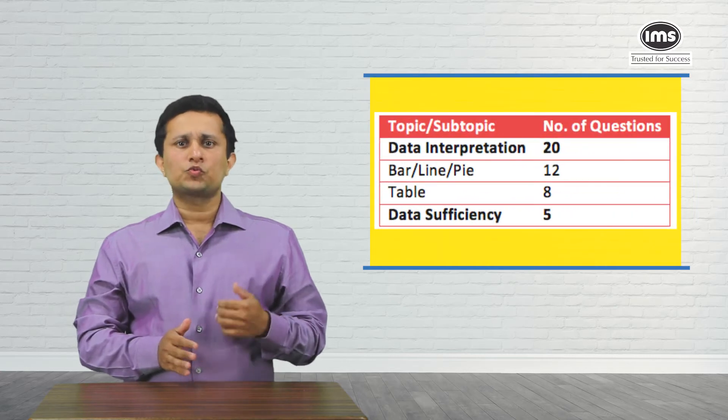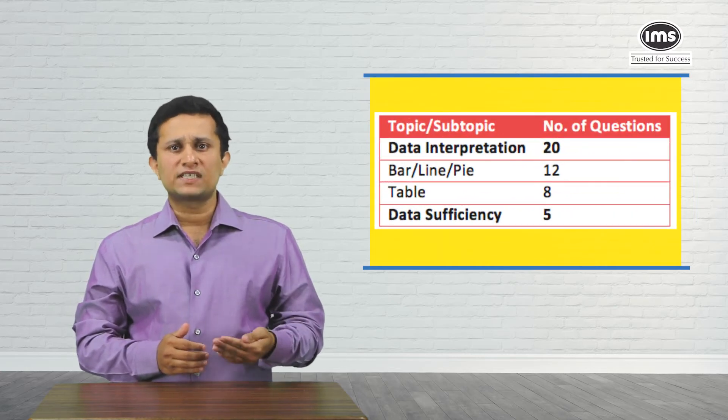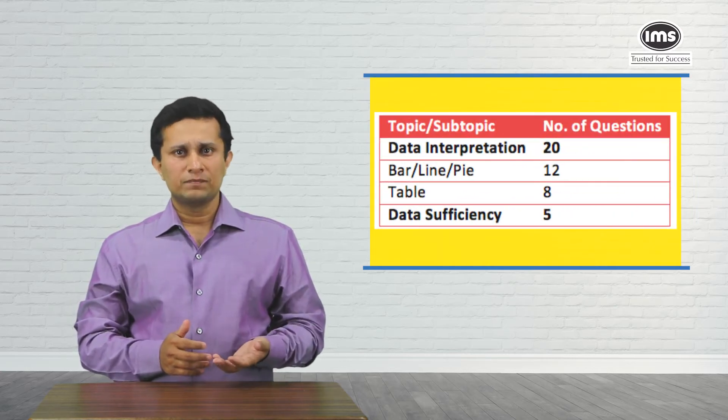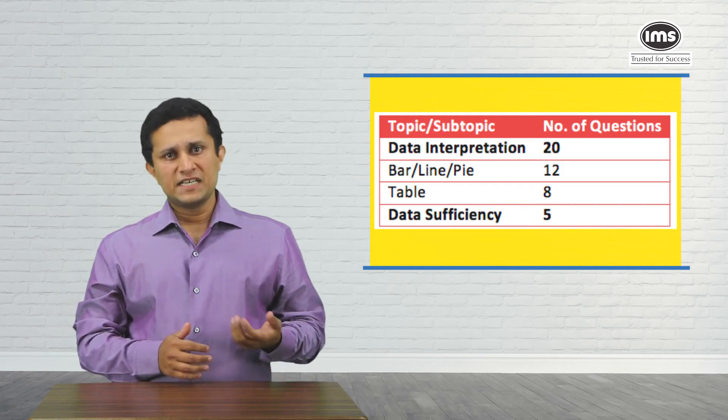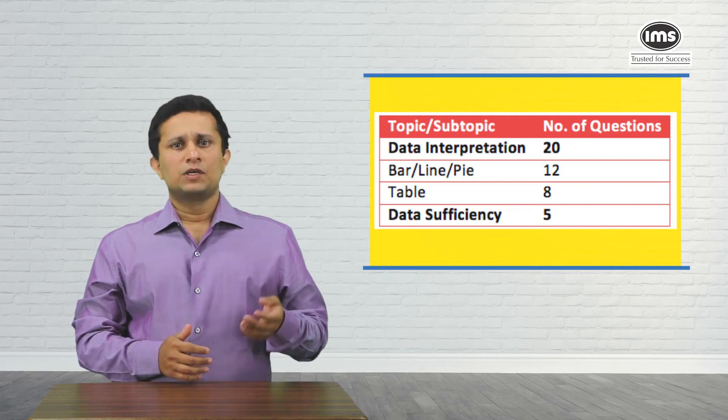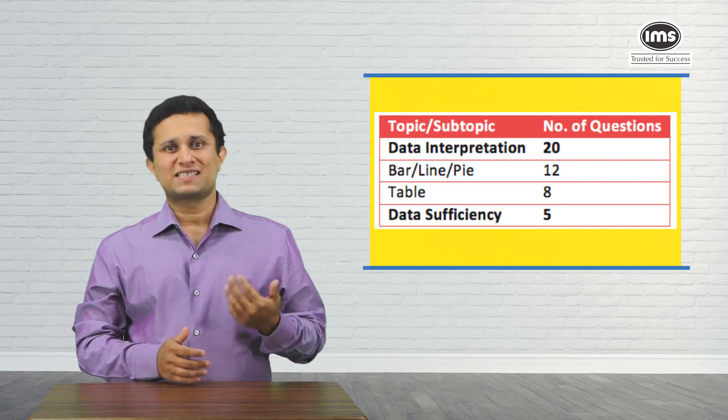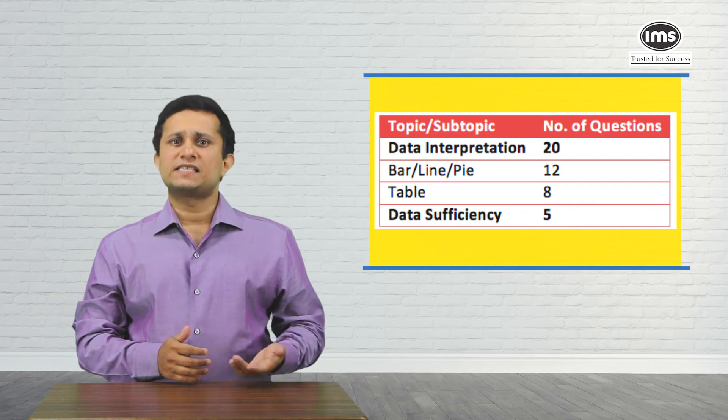Once you identified the 2 or 3 sets that you wanted to attempt, everything else fell into place. Typically, across slots, what we have seen is that there are 2 sets that are tabular in nature and 3 sets that have a combination of multiple graphs. These could be multiple pie charts, bar plus pie, bar plus line, two line graphs, etc.